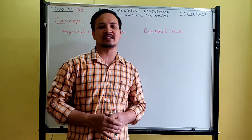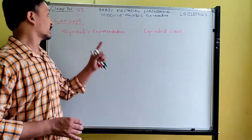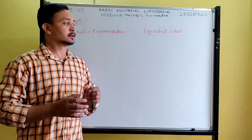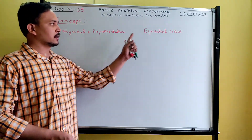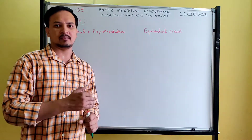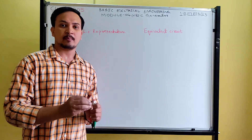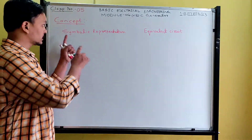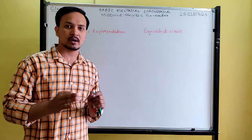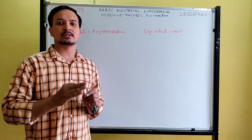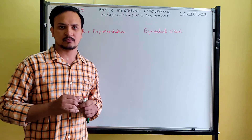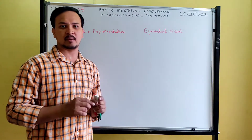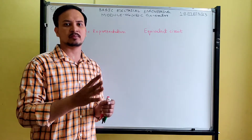Good morning students, welcome to basic electrical lectures. This is class number 5 of module 4 on DC generators. In this lecture I am going to explain the concept of symbolic representation and equivalent circuit of DC generator, and after that I will explain the difference between lap and wave winding. This comparison is very important for exams and is required for understanding voltage and current relations on different types of generators.